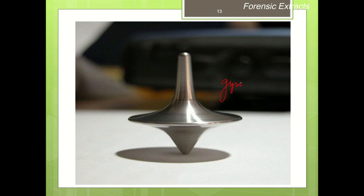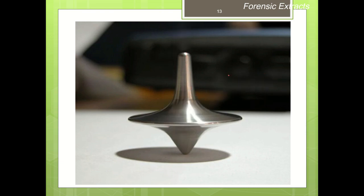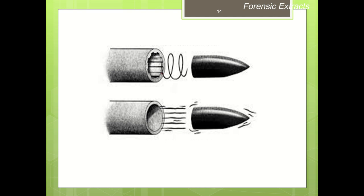A gyroscope works on the principle that if you provide a rotational motion to any instrument or device, it will move straight. Similarly, in a rifled firearm barrel, the bullet moves with a spiraling motion due to the rifling, causing it to travel in a straight trajectory. Without rifling inside the barrel, there are chances of the bullet tumbling and not traveling along a straight trajectory.